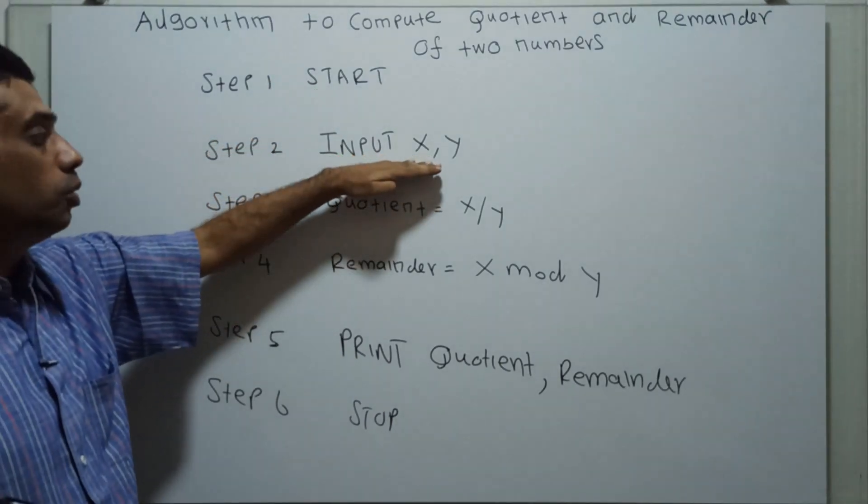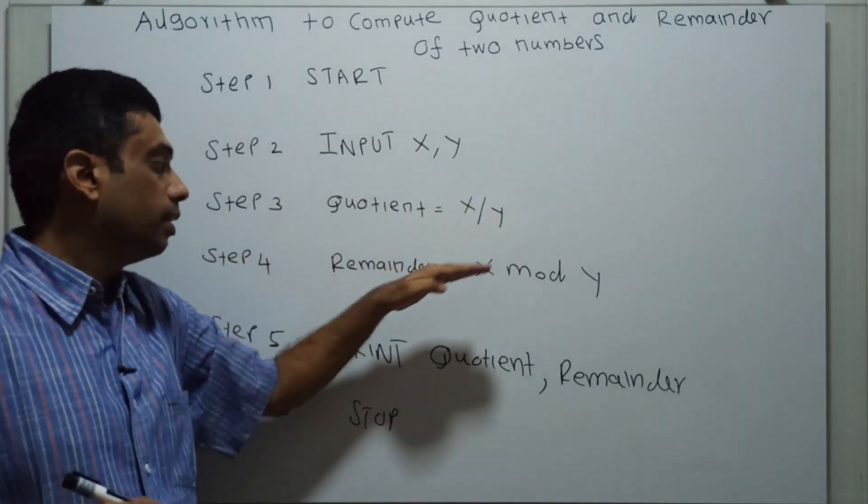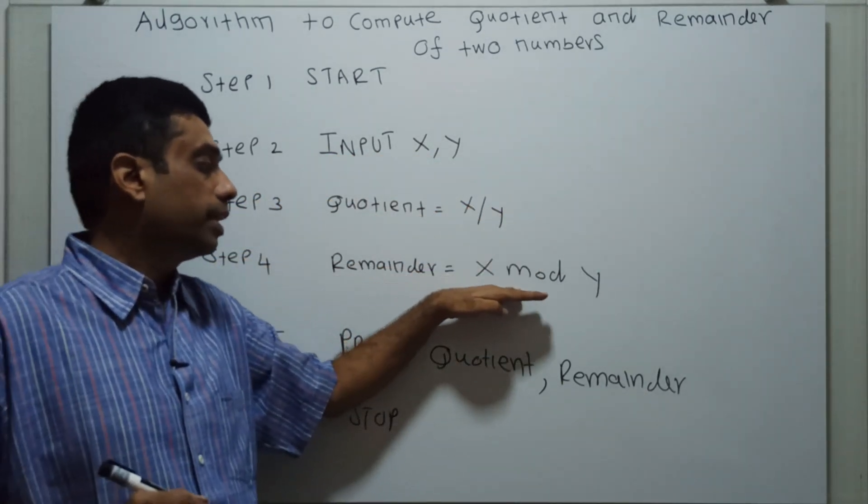I am obtaining input, the two numbers x and y from the user. Quotient equal to x divided by y. Remainder equal to x mod y.